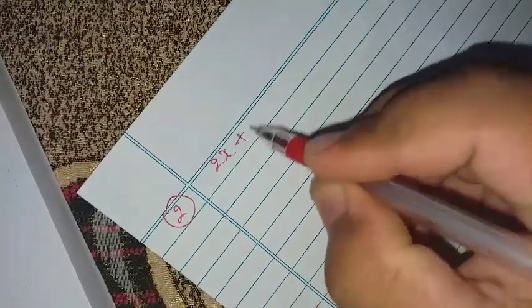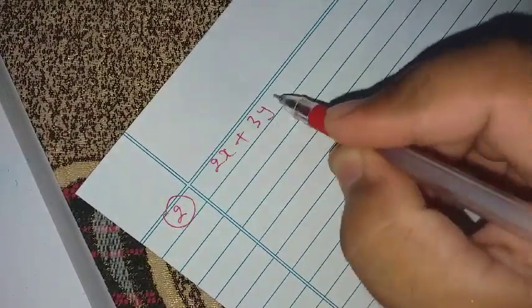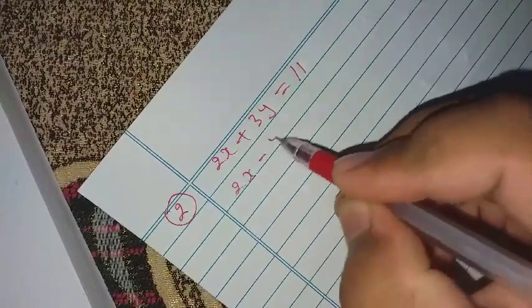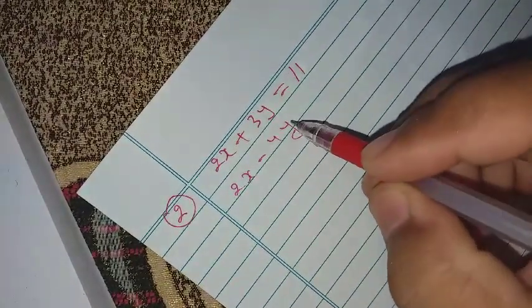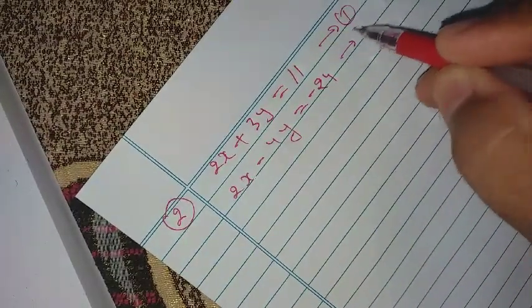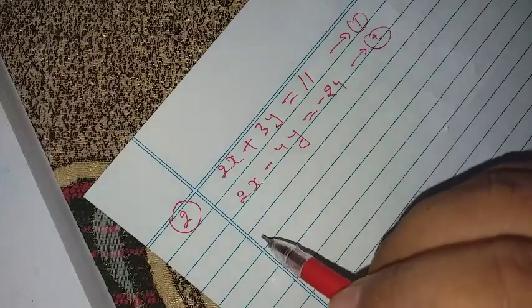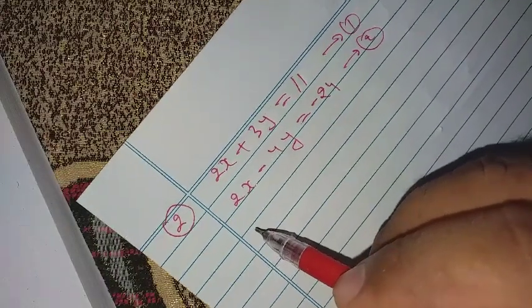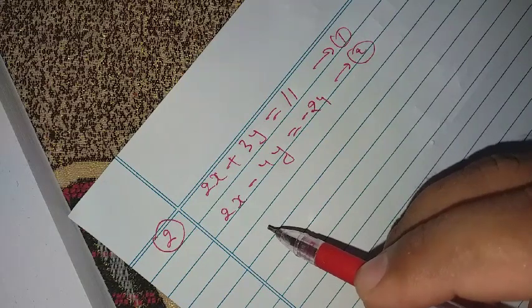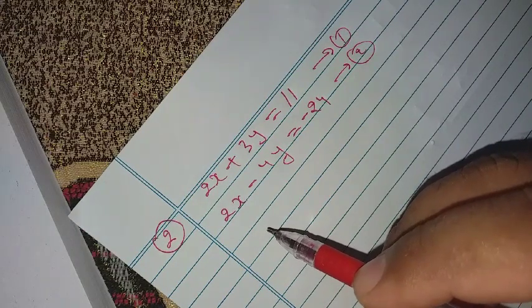Question number two exercise number 3.3. So 2x plus 3y equal to 11 and 2x minus 4y equal to minus 24. It is equation number one and it is equation number two. Okay so it is not given here by which method we have to solve this. So we can take any method.